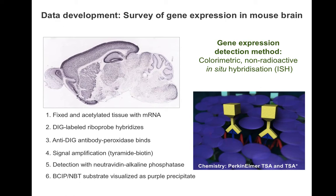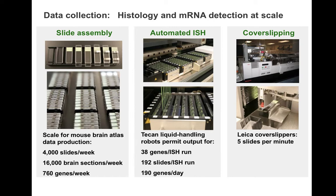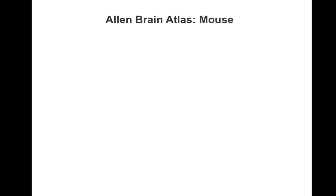Each slide was assembled into a cassette, which created a reservoir for facilitating the automated ISH process created at the Allen Institute. The hybridization process was completely automated, allowing for a high-throughput procedure that expedited the assaying of approximately 20,000 genes within three years. Even the cover slipping was automated to ensure reproducibility.